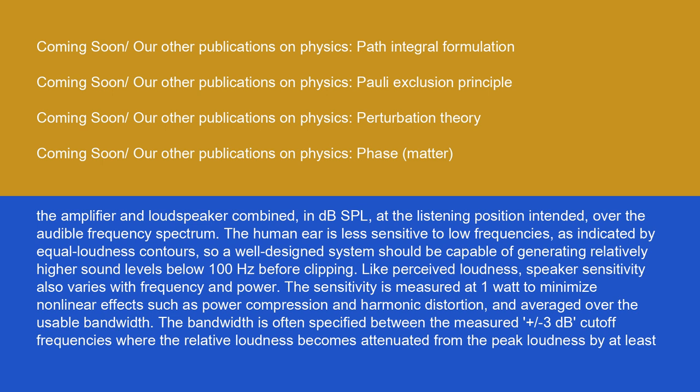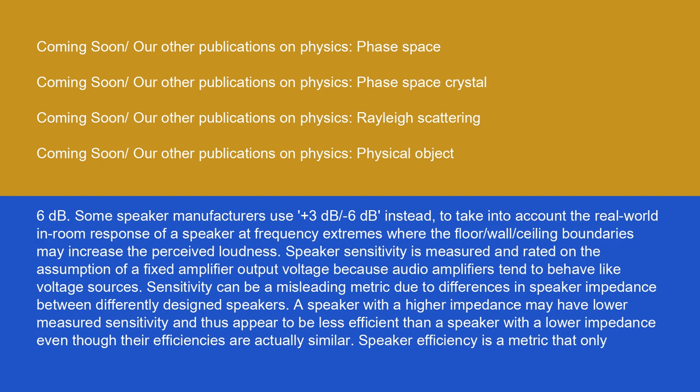The bandwidth is often specified between the measured plus or minus 3dB cutoff frequencies where the relative loudness becomes attenuated from the peak loudness by at least 6dB. Some speaker manufacturers use plus 3dB per minus 6dB instead to take into account the real-world in-room response of a speaker at frequency extremes where the floor, wall, and ceiling boundaries may increase the perceived loudness.